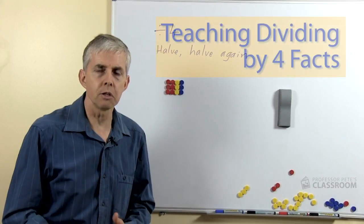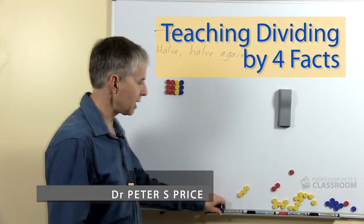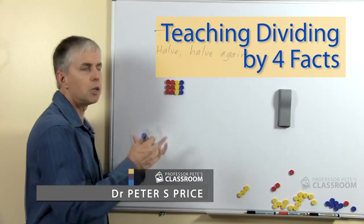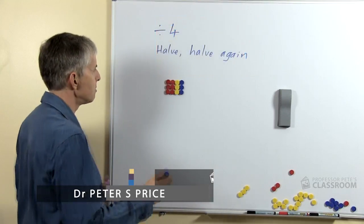The recommended strategy is to halve a number and halve it again. This is the reverse of doubling and then doubling again for four times.